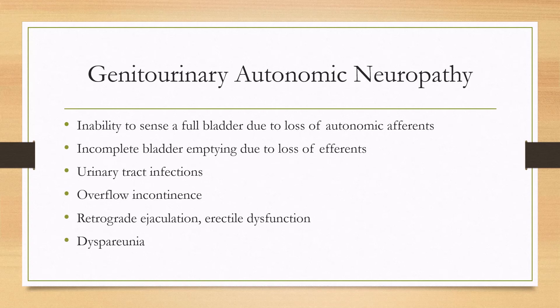For the genitourinary manifestations, there is an inability to sense a full bladder due to loss of autonomic afference, and incomplete bladder emptying due to loss of efference. These combined can lead to urinary tract infections and overflow incontinence. Sexual manifestations include retrograde ejaculation and erectile dysfunction in men, and dyspareunia in women due to decreased vaginal lubrication.